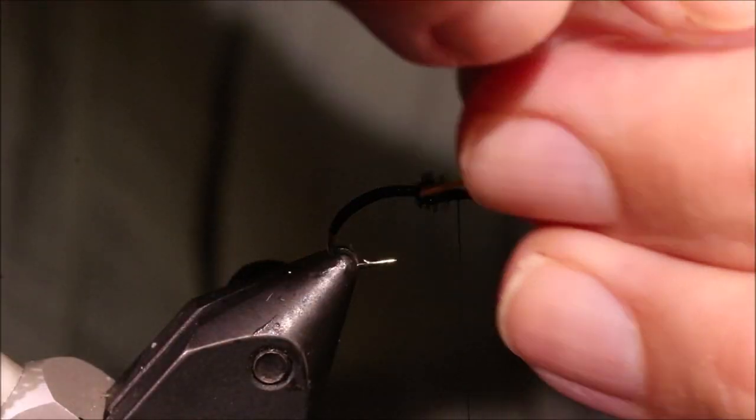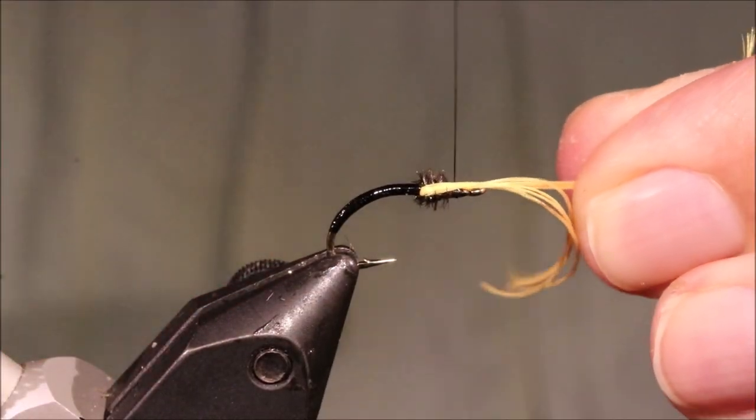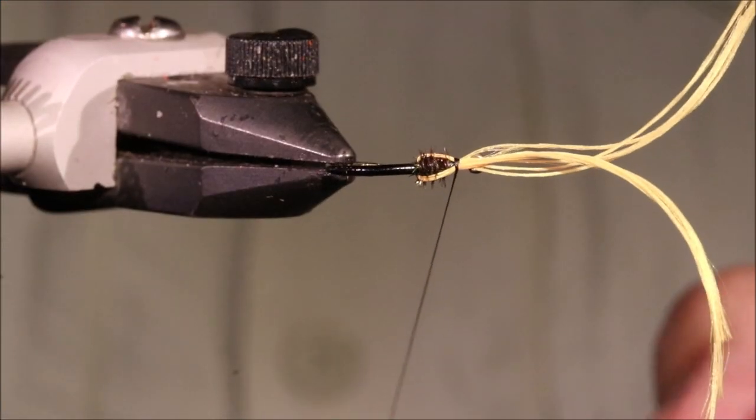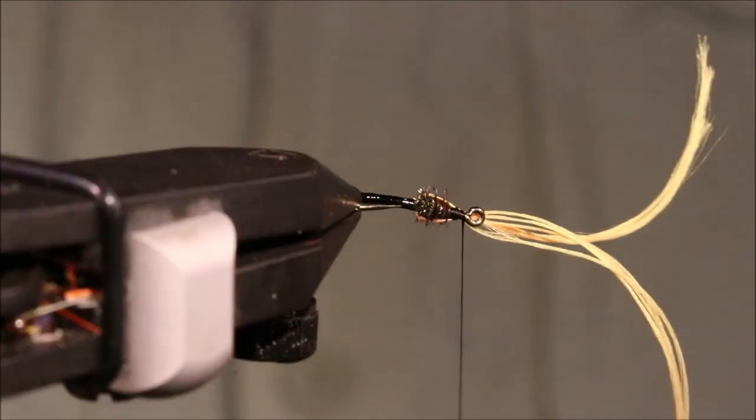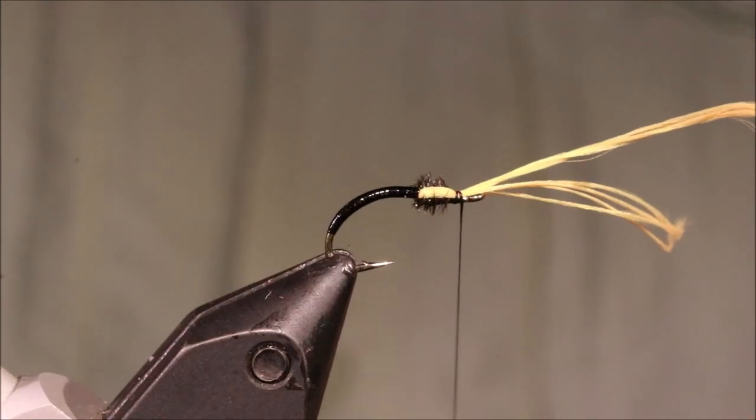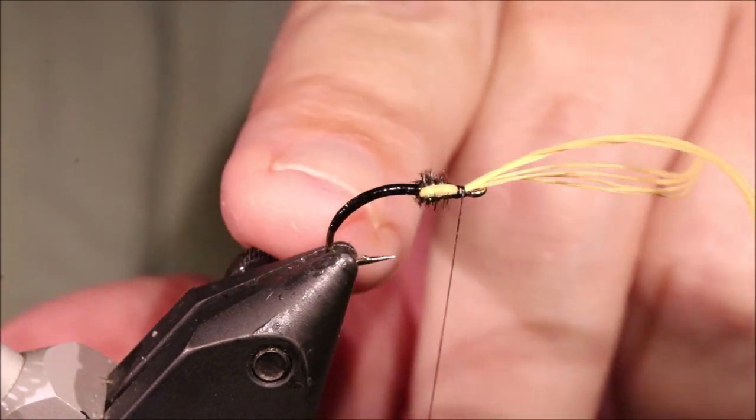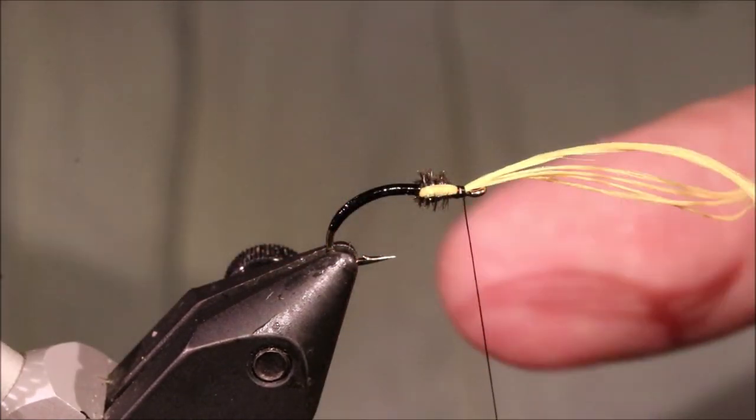I'm going to pull them up and catch them on top. Same on this side, pull them up and catch them on top so they're tied above the hook shank. So at the back they're below, at the front they're above.